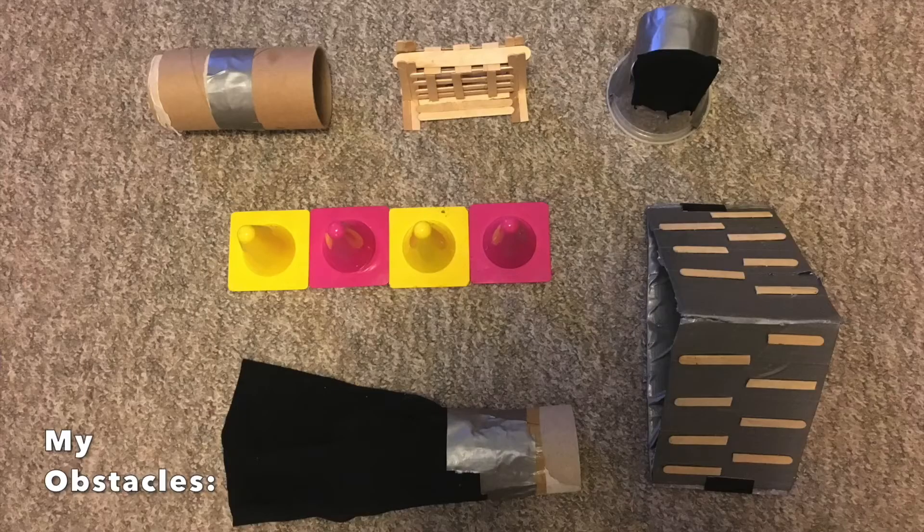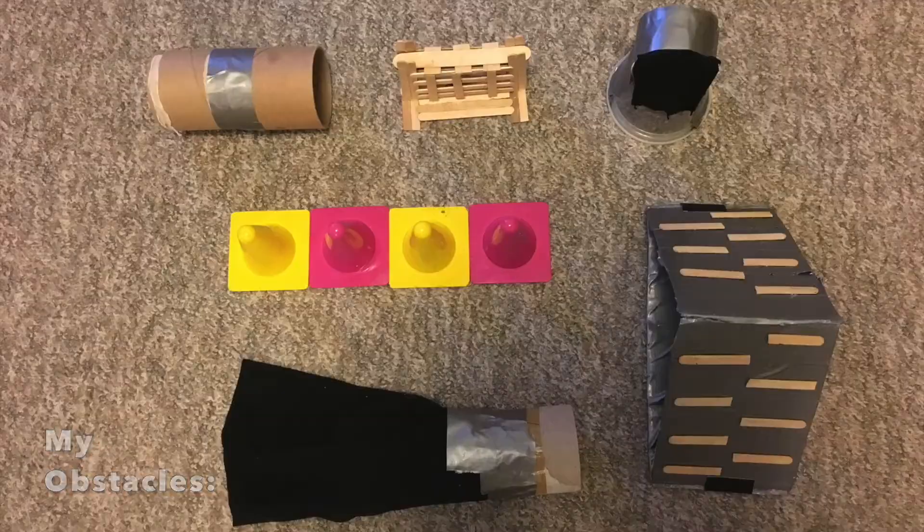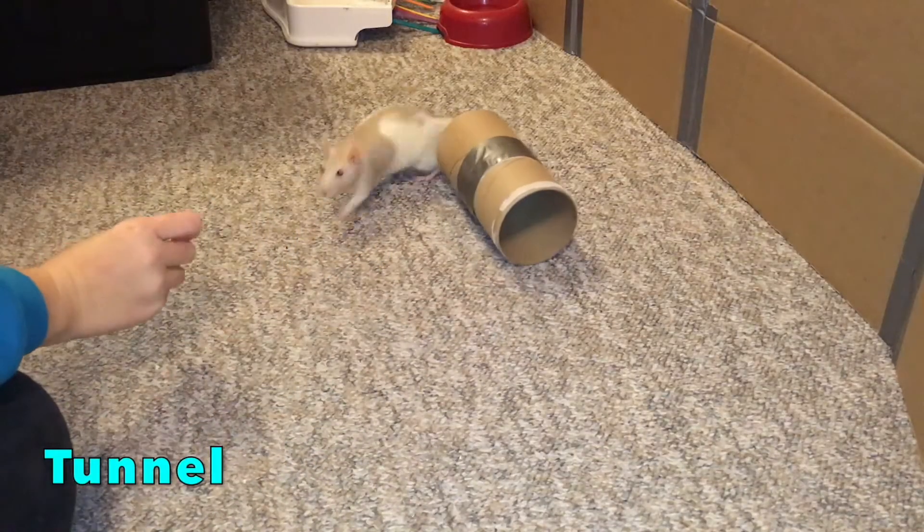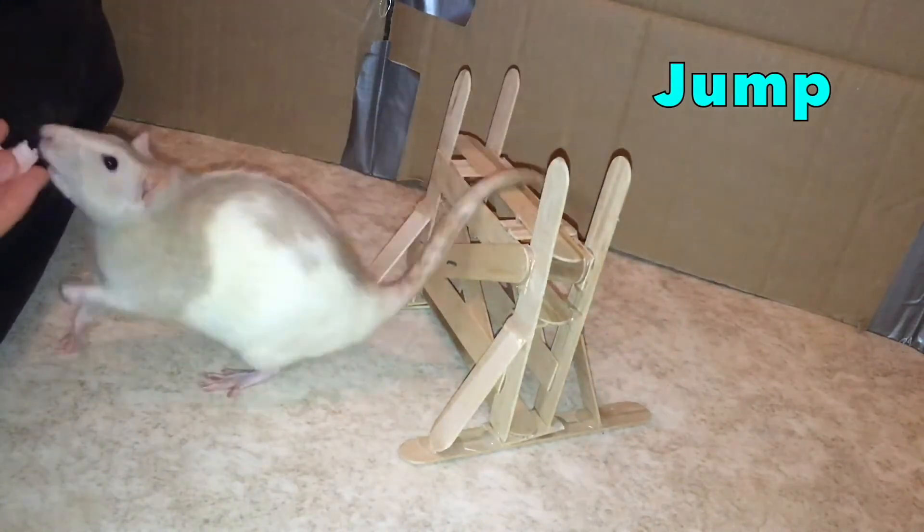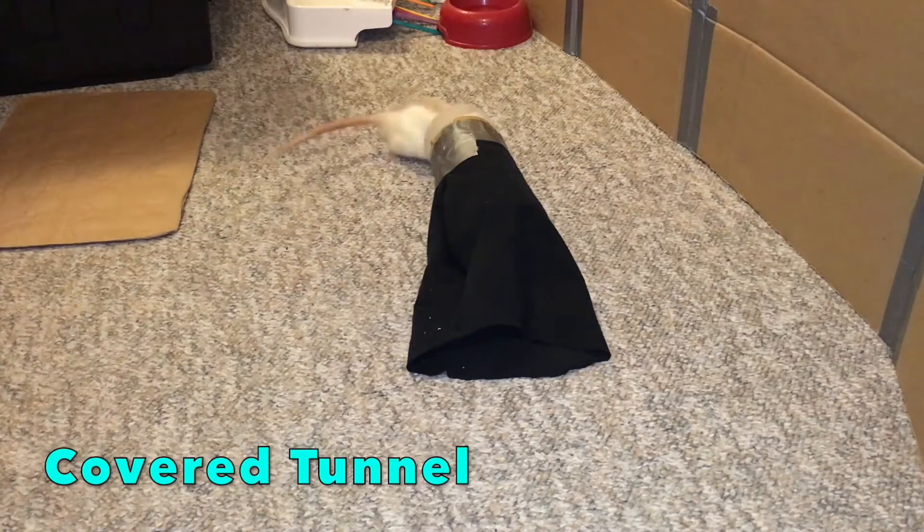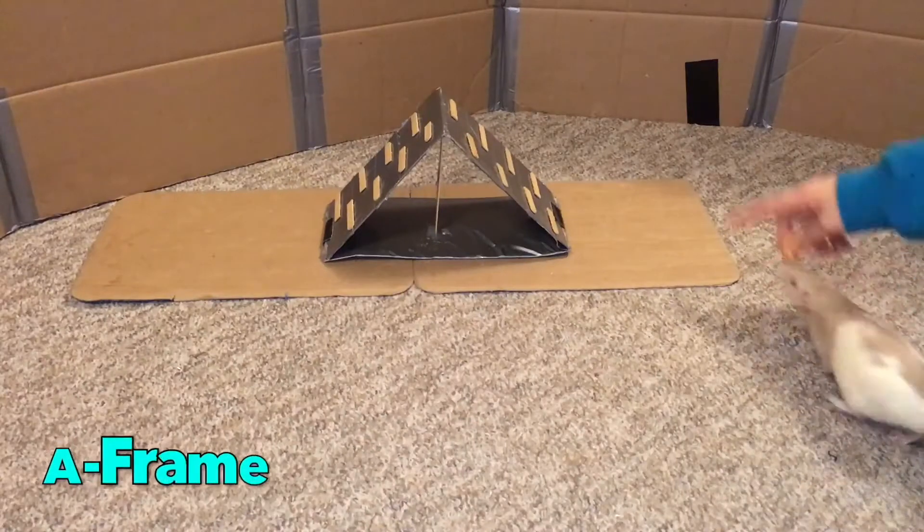Okay, to start off, we have to train our rats each of these obstacles on their own so that they know how to perform them. In this case, my course is going to consist of six different obstacles: a tunnel, a jump, a chute, an A-frame, a closed hoop jump, and of course, the weaves.